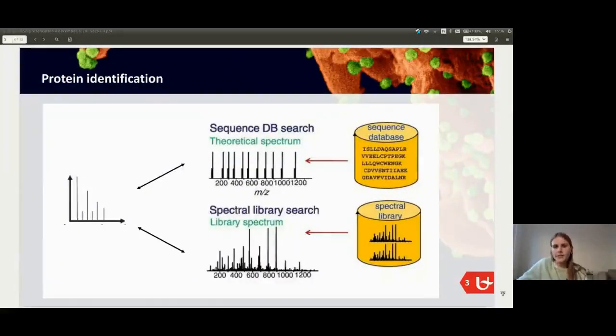Every peptide that we detect using mass spectrometry will give us a spectrum and this spectrum then needs to be identified. So figure out from which peptide the spectrum originated and this is often done by using a search engine. The search engine needs a reference database to which this observed spectrum needs to be matched to a spectrum from your reference database. This reference database can either contain theoretical spectra that are originated from the sequence database or it can contain a spectral library of experimental spectra that have been identified already.